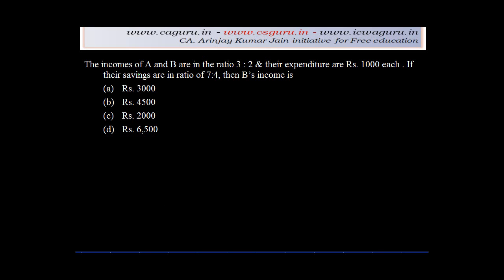Let's use the concept of ratio to solve a problem given in the form of income and expenditure. The incomes of A and B are in the ratio of 3 is to 2.